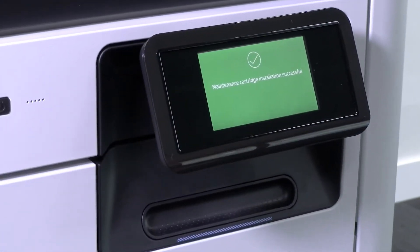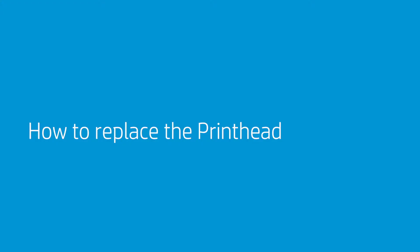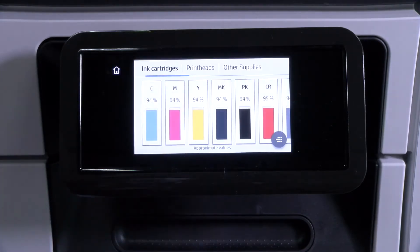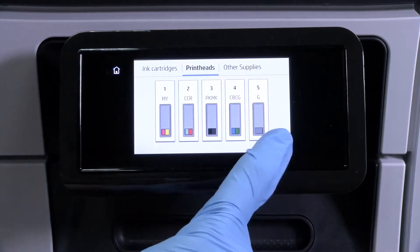How to replace the printhead. On the printer's front panel, tap the inks icon to replace the printheads. The carriage will move to the removal position.